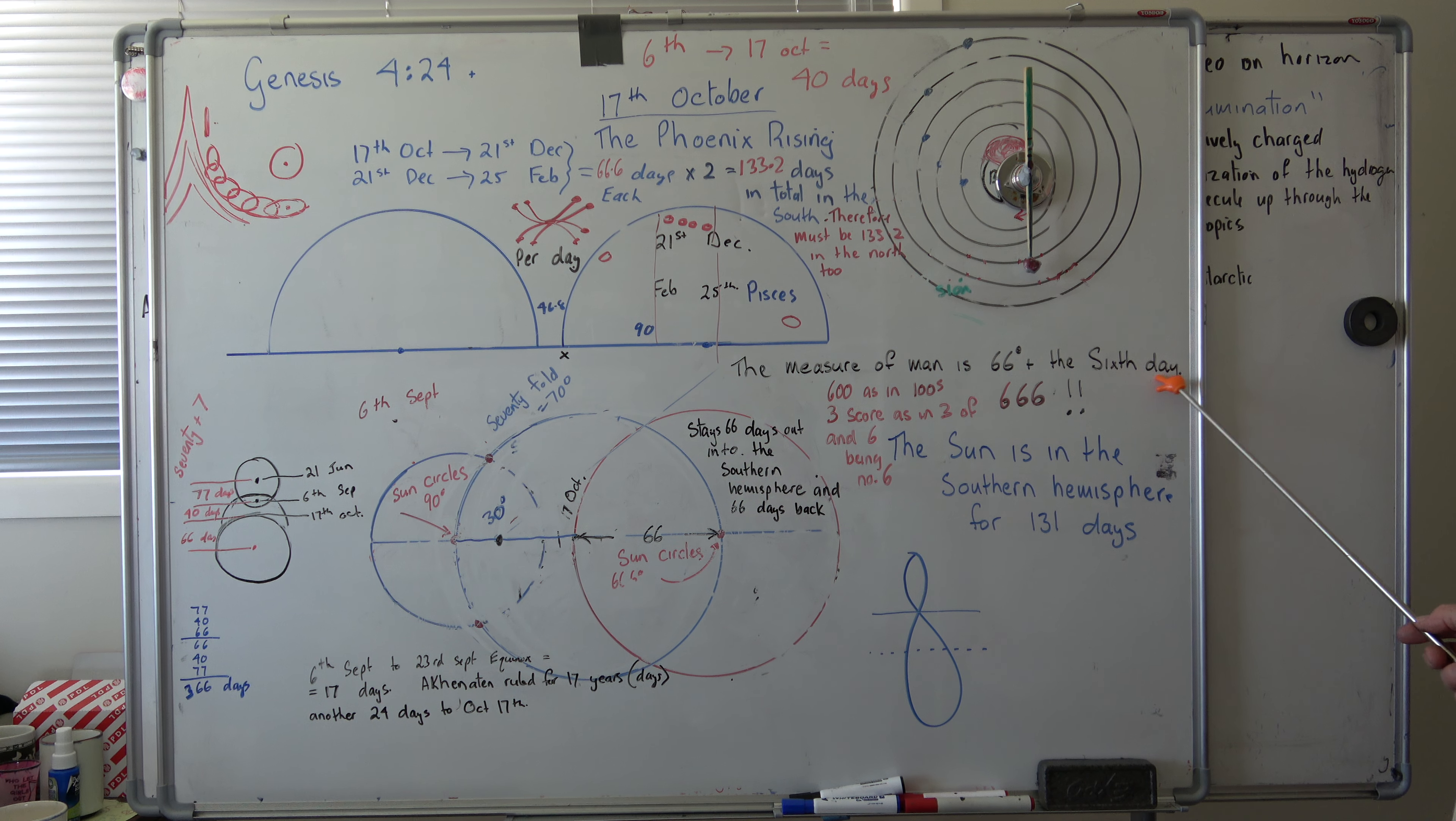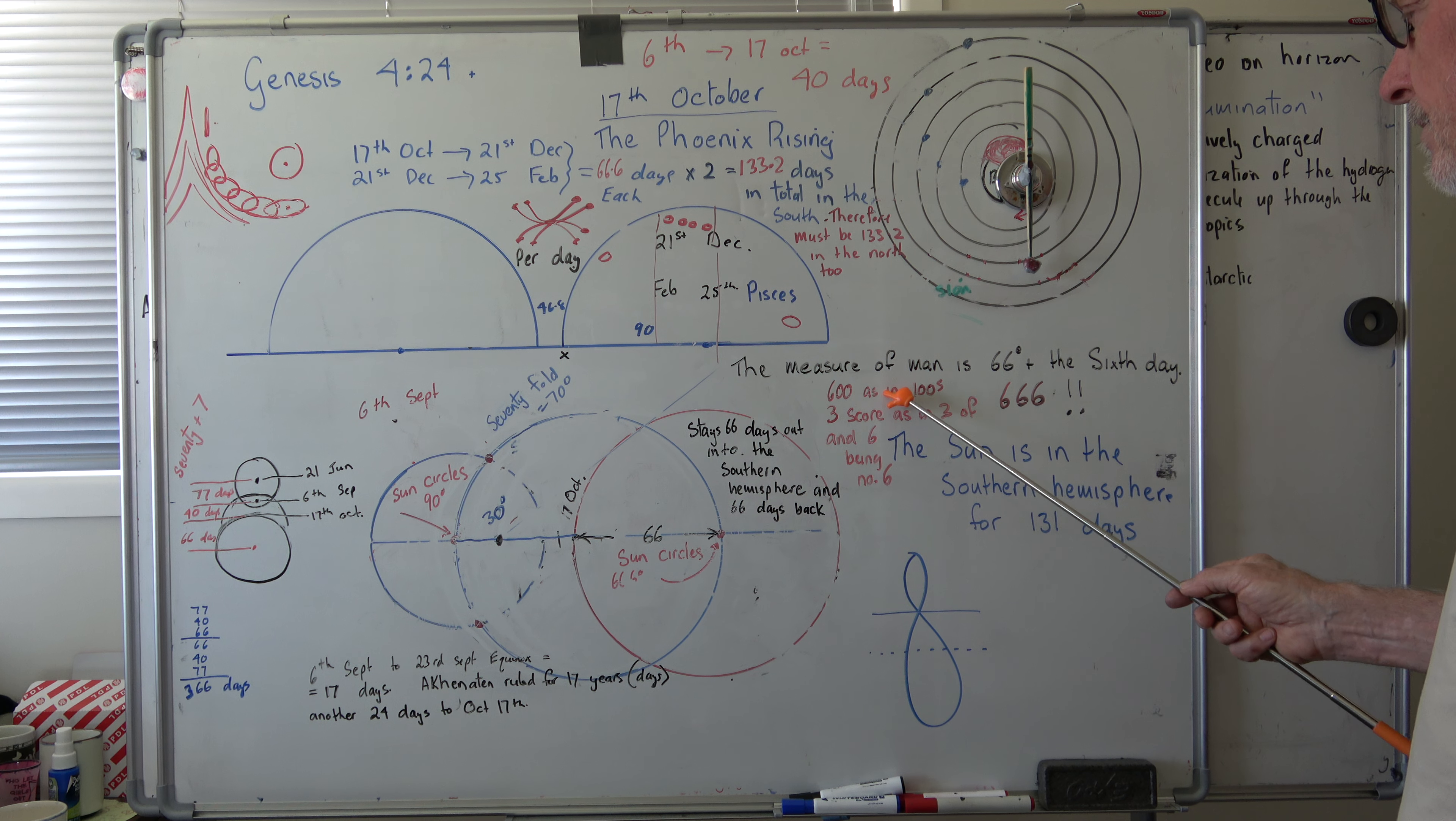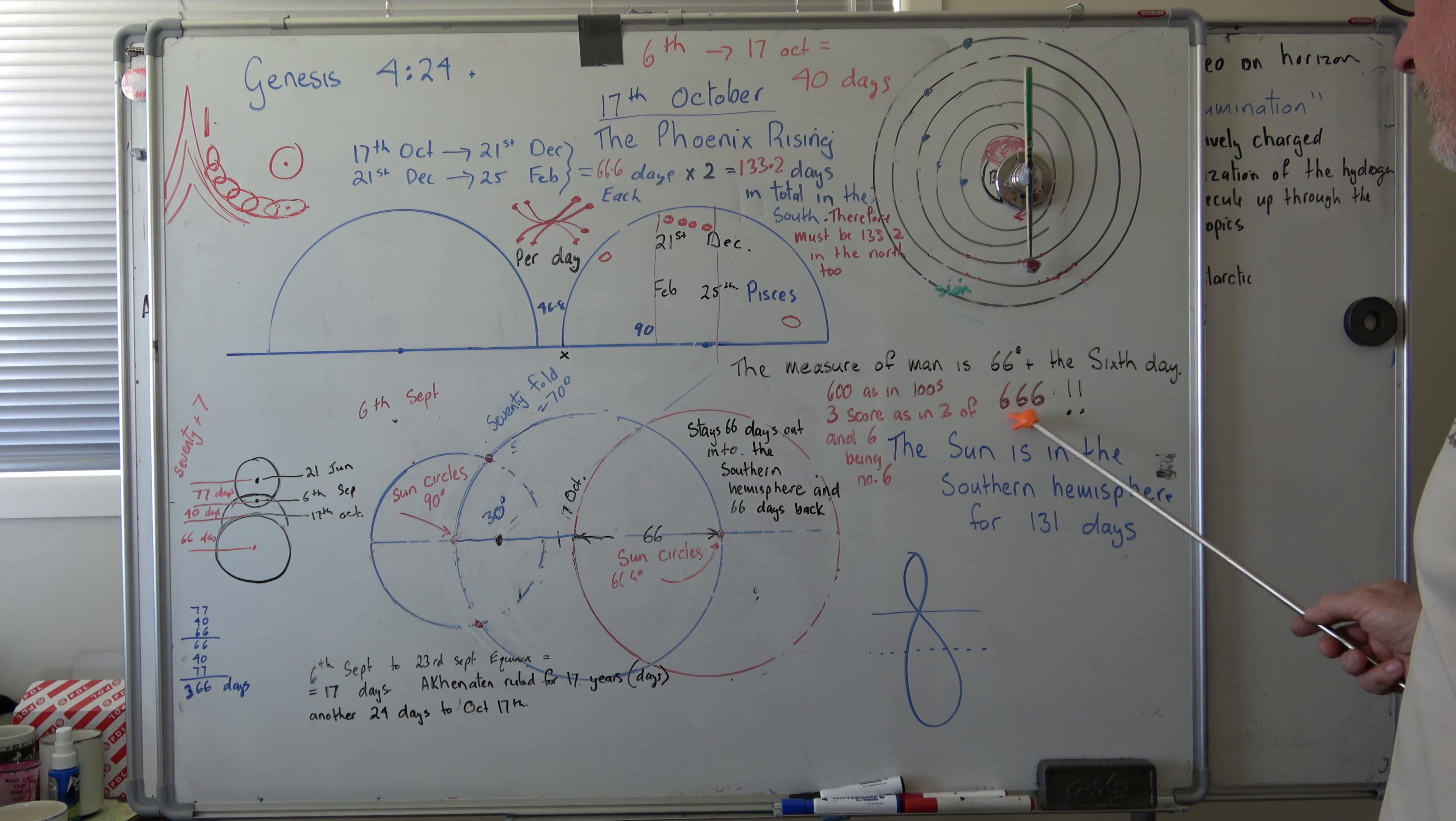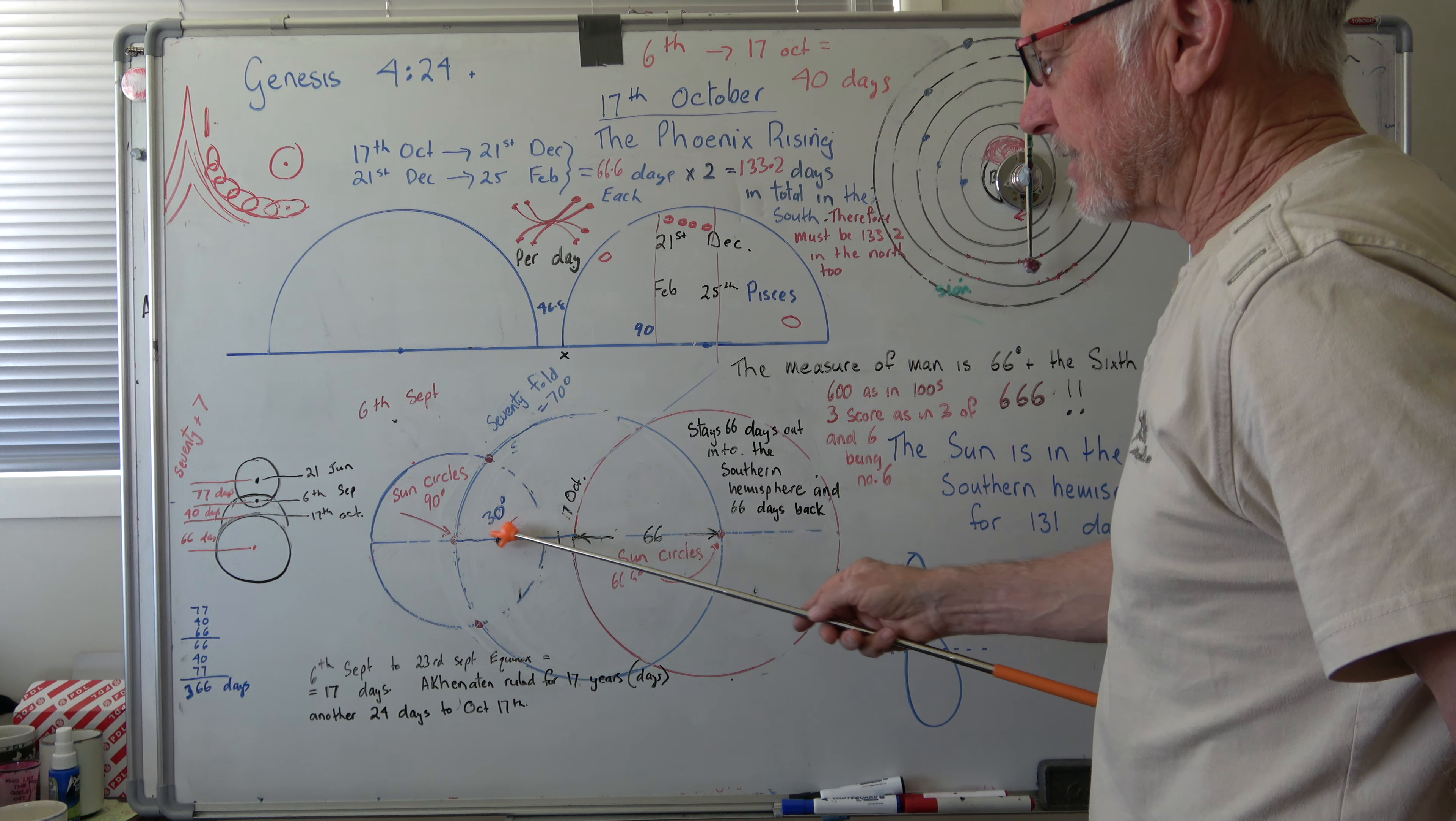You're getting a bit more information here. The measure of man is 66 degrees plus six, sixth day—600 as in the hundreds column, three columns, three score as in three of three sixes, and six being number six. We've got our three times here—600, three of them, three digits, three score, three of, and six, number six. Six, six, six, six.